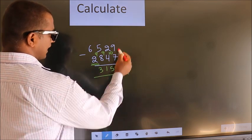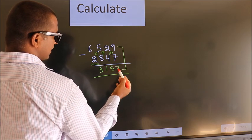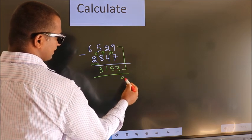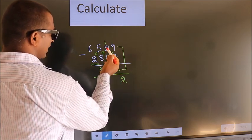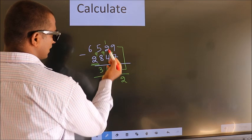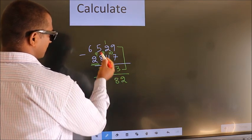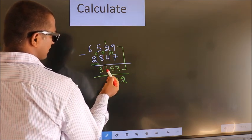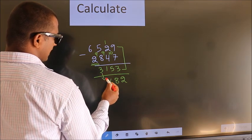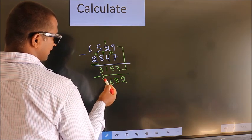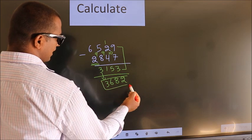Now add these 2. 9 plus 3 is 12, so 2 here, 1 here. 1 plus 2 is 3. 3 plus 5 is 8. 5 minus 1 is 6. First digit, as it is, you write it down. So this is our answer.